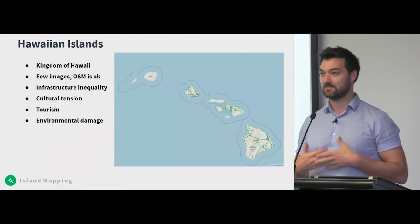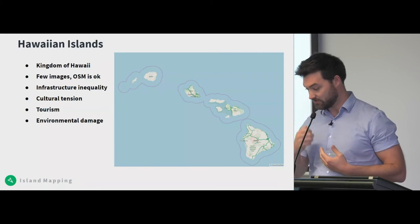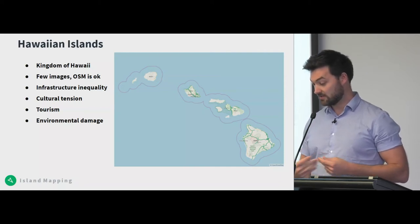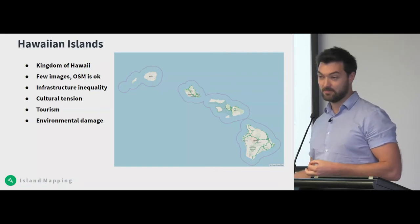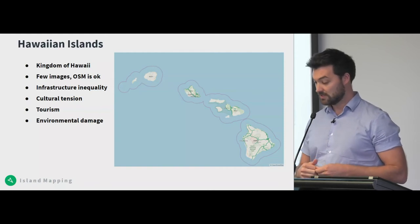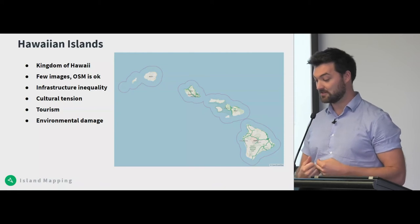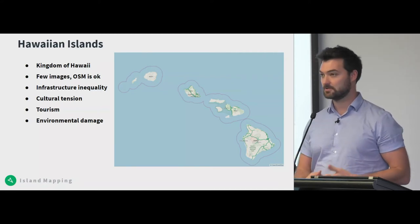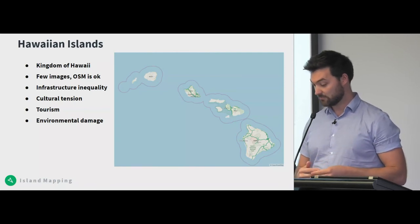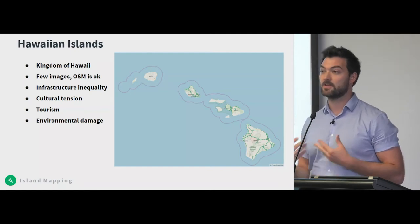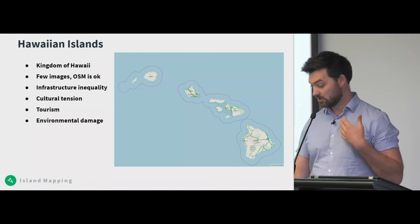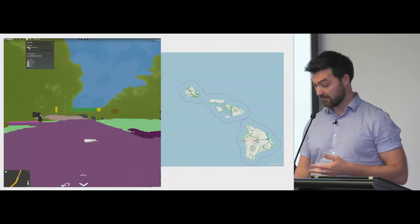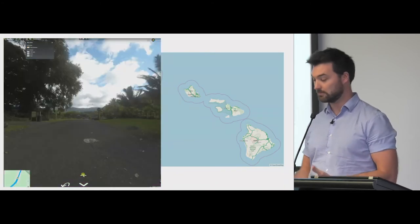Hawaii is another great example of an island that faces a lot of common island problems and has a very rich history that still endures today. Originally the Kingdom of Hawaii, it was annexed by the United States and today is a US state. It has very few street-level images, though it's rather well mapped on OpenStreetMap. Once you're there using the map to get around, you can see there's a lot of inequality in how infrastructure is distributed. There's quite a bit of cultural tension between people native to Hawaii and people who came from outside — from North America, Asia, and elsewhere. There's a huge amount of tourism running the economy, a lot of environmental damage from invasive species and human development. Rural parts of Hawaii have pretty well-paved roads, but there's a lot of vegetation and the natural world mixed in with where people are living.